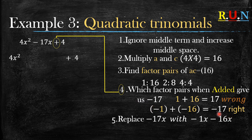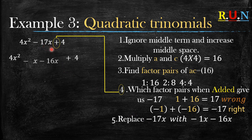Given that negative 1 and negative 16 are the right factors that give us negative 17, this means we replace the negative 17x with negative 1x minus 16x, placing these two terms in the expanded middle space. Because it's a 1, it doesn't need to be written explicitly.